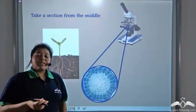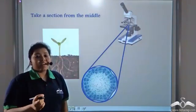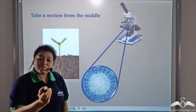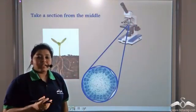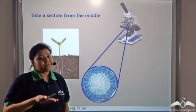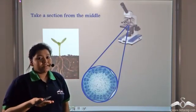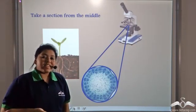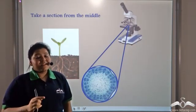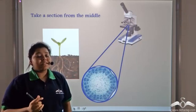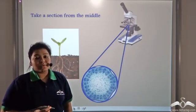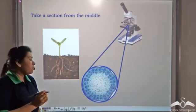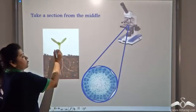Now the marking that Peter had made at the bottom of the plant did not go further up. So from that it is clear that that portion of the plant did not grow.